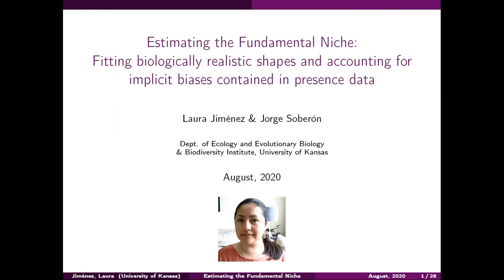The main two features that make these models different from the ones that are already out there: first, they allow us to fit biologically realistic shapes to represent the fundamental niche in environmental space, and second, they account for implicit biases contained in the presence data, mainly due to the fact that presence points come from the realized niche.